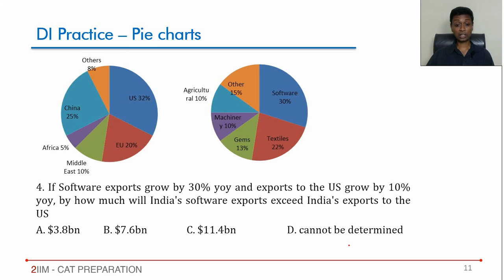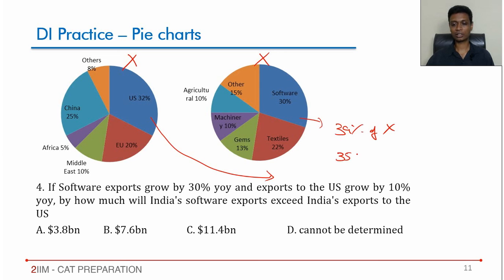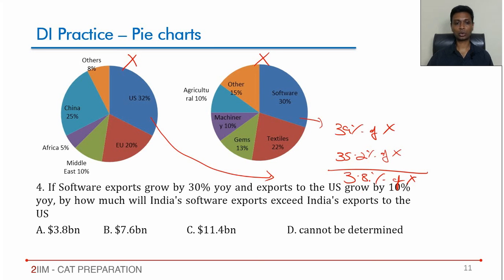If software exports grow by 30% year-on-year and exports to the US grow by 10% year-on-year, by how much will India's software exports exceed exports to the US? If overall exports = X: software grows from 30% to 39% of X; US exports grow by 10% of 32%, adding 3.2%, reaching 35.2% of X. Software exceeds US exports by 3.8% of X. Since the answer must be in actual terms, X = 200 billion, so 3.8% of 200 billion = 7.6 billion US dollars.